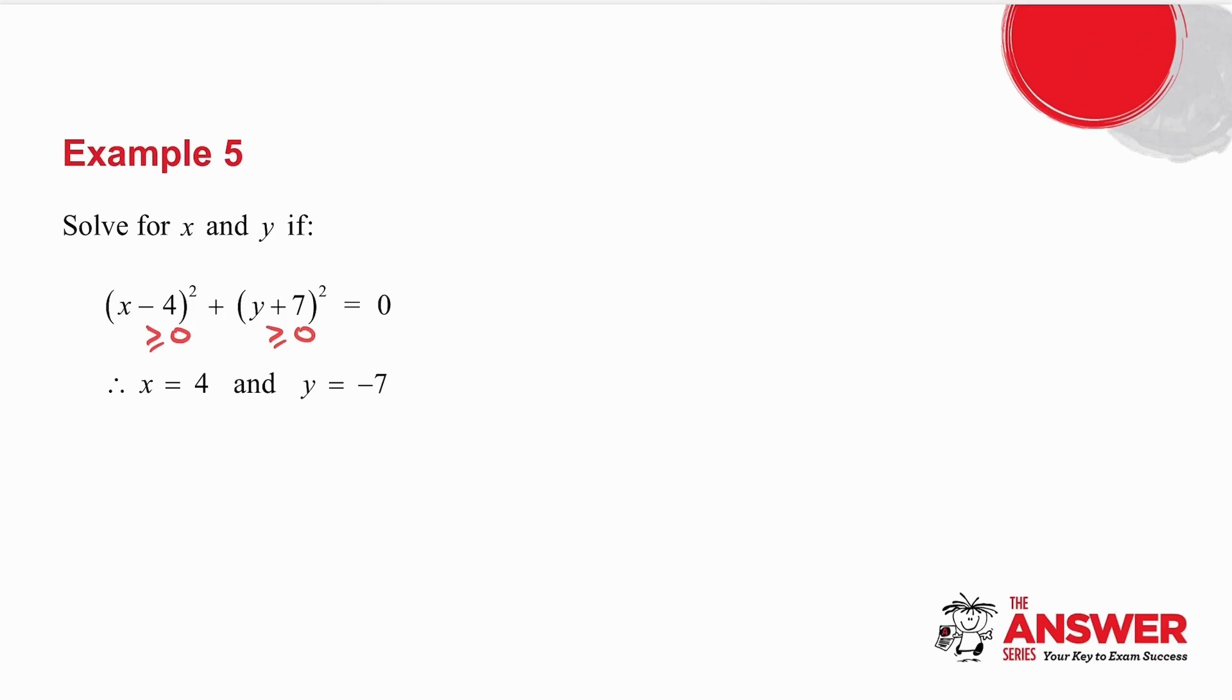which means that both of these have got to be 0. So x minus 4 squared has got to be 0, which means x has got to be equal to 4. y plus 7 squared has got to be 0, which means that y is equal to minus 7. And very, very important.